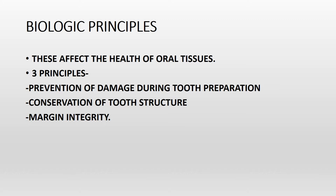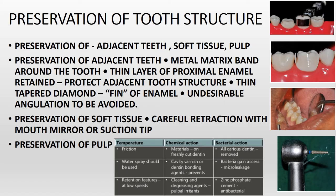Under the biological principle, there are three main sub-principles: prevention of damage, conservation of tooth structure, and margin integrity. The first is preservation of tooth structure — meaning you preserve the adjacent teeth, soft tissue, and the pulp. When preparing a tooth, you must not damage the adjacent teeth. The soft tissue includes the gingiva, tongue, and mucosa. In bridges, the abutments can be healthy teeth, so you must preserve their pulp.